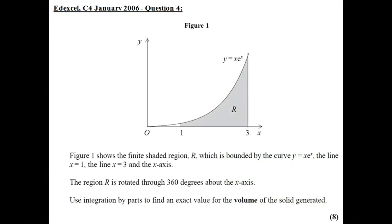Hi there, in this video I'm going to do a past paper question on integration. Let's take a look at question number 4. Figure 1 shows the finite shaded region R, which is bounded by the curve y equals xe to the x, the line x equals 1, the line x equals 3, and the x-axis. The region R is rotated through 360 degrees about the x-axis, and we need to use integration by parts to find the exact value of the volume of the solid generated.